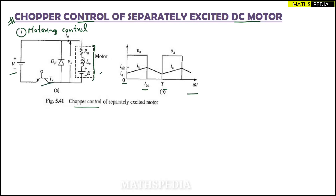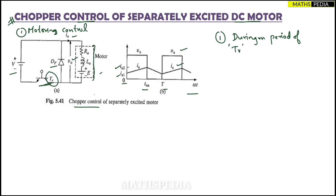The circuit has a voltage source, a transistor, and a freewheeling diode. The terminal voltage VA and armature current waveforms are shown in the graph, with current levels Ia1 and Ia2 marked. Focusing on the transistor: during the ON period of transistor TR, the interval from zero to T_on is called the duty interval.